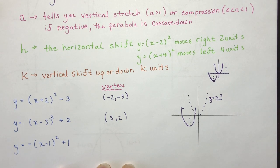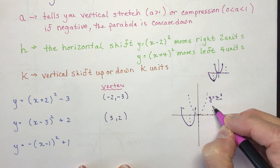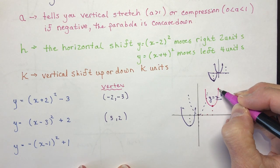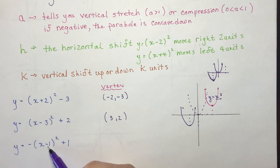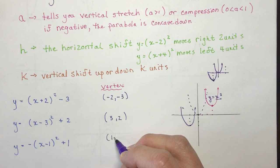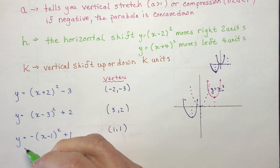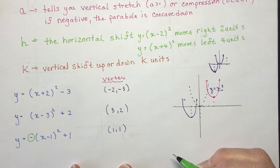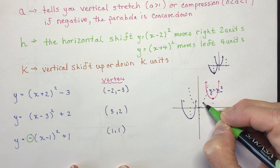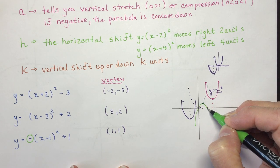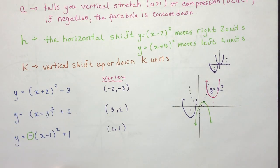So the vertex is 3 and 2 — move right 3 units and up 2 units, and there's the new vertex with the same shape. For the last of these three, the vertex is going to be 1, 1 — opposite sign from what's in the bracket, same sign for k. And there's a negative sign out front, which tells me the parabola is going to be concave down. So I go right 1, up 1 for the vertex, and it opens downward.